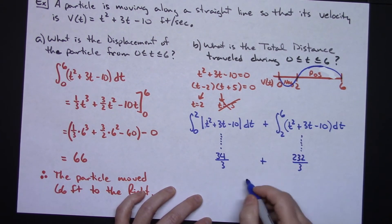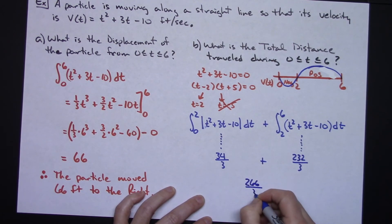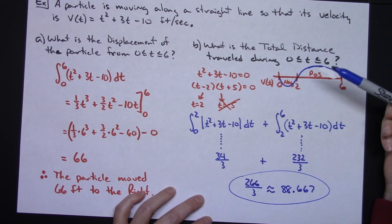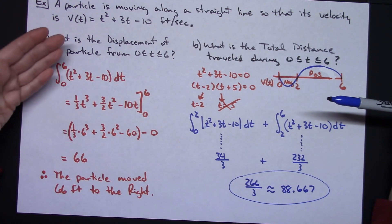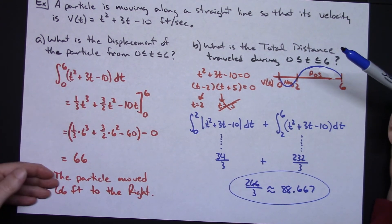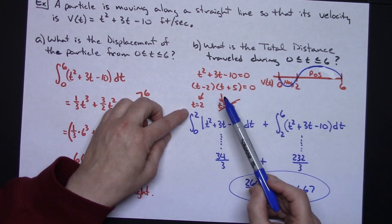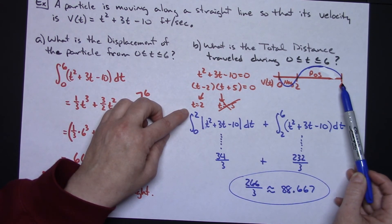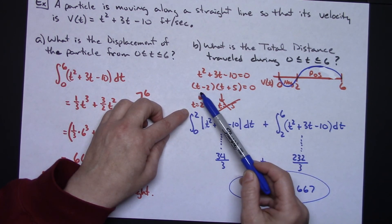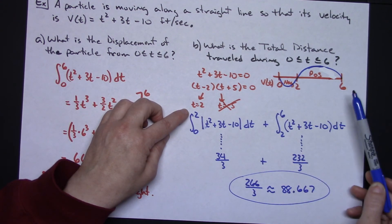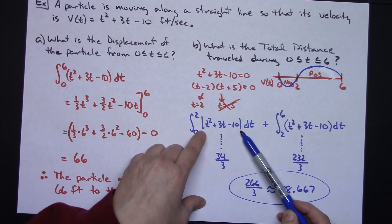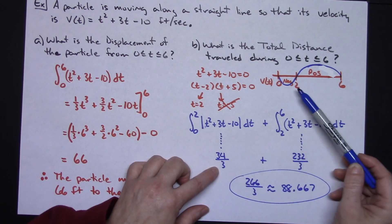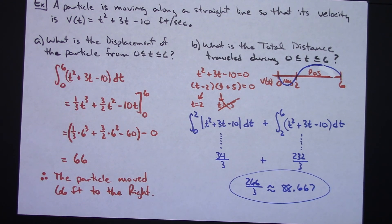That gives a total area of 266 over 3, or approximately 88.667 feet. So that's the difference between displacement and total distance. For displacement, integrate the velocity function directly. For total distance by hand, find where the curve is negative and where it's positive using a number line — set equal to zero, factor, check intervals. Any interval that is negative, take the absolute value so you get the positive area; if it's already positive, integrate normally.